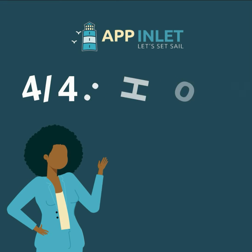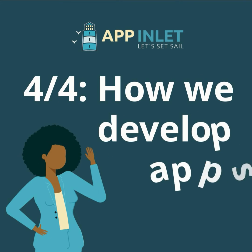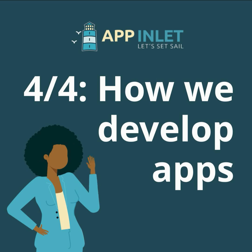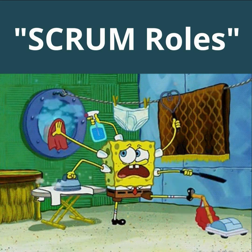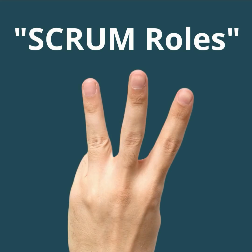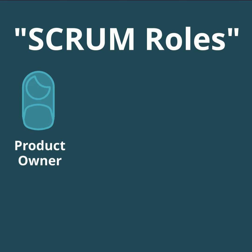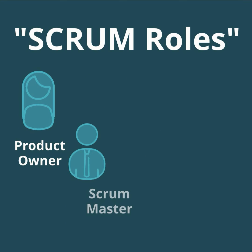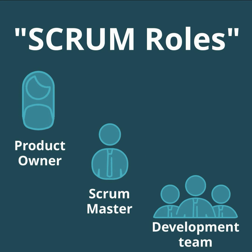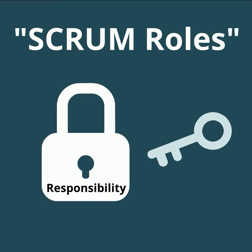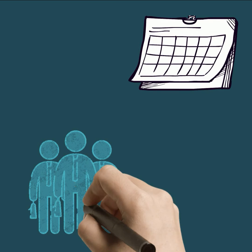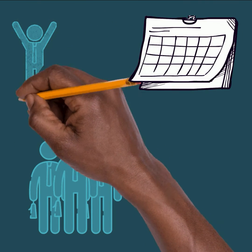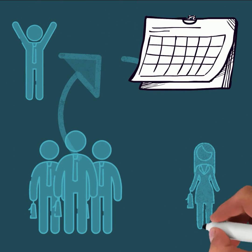Welcome to part four of How We Develop Apps. In this video, we will introduce the different roles involved in the development process we use, which is called Scrum. There are three roles within our Scrum environment: Product Owner, Scrum Master, and the Development Team members. These roles describe the key responsibilities for those on the Scrum team, allowing teams to take responsibility for how they organize themselves as well as collaborate for improvement.